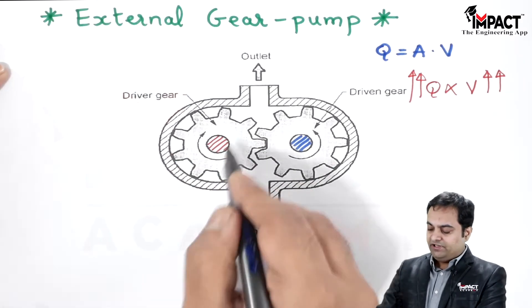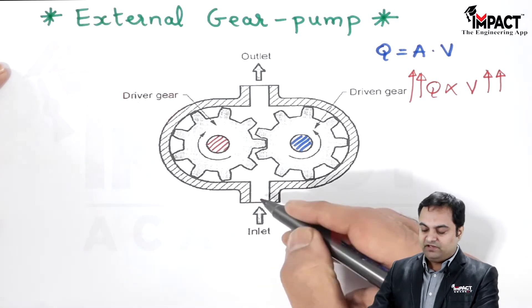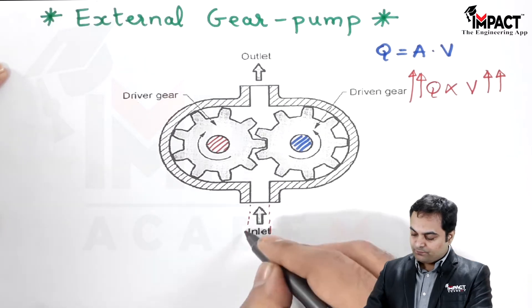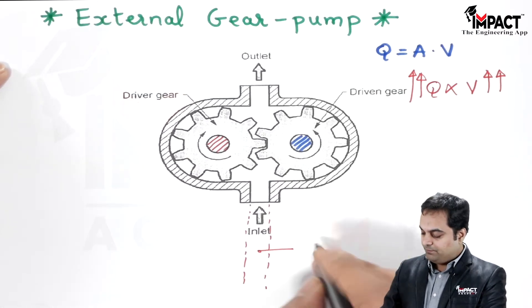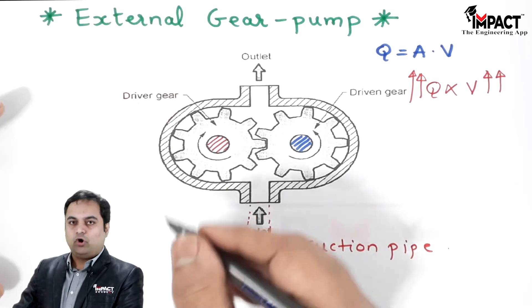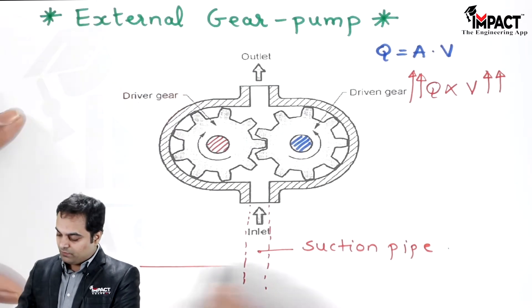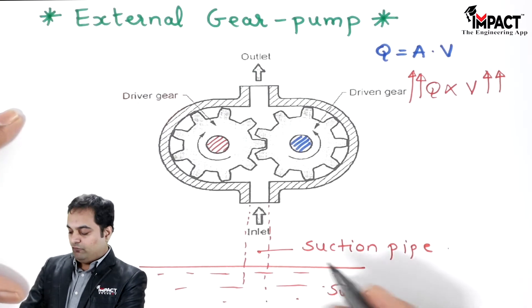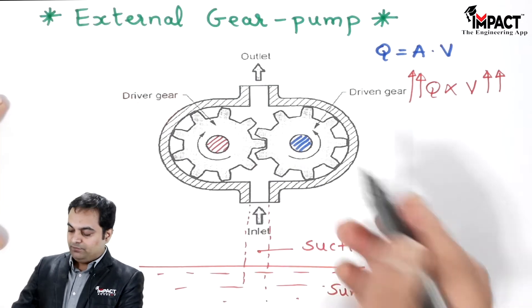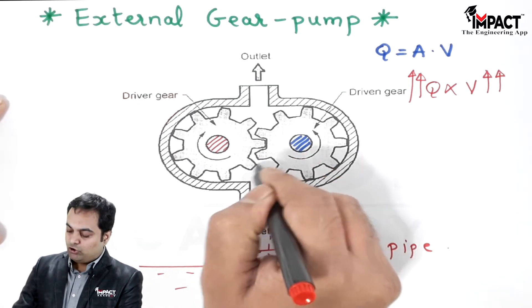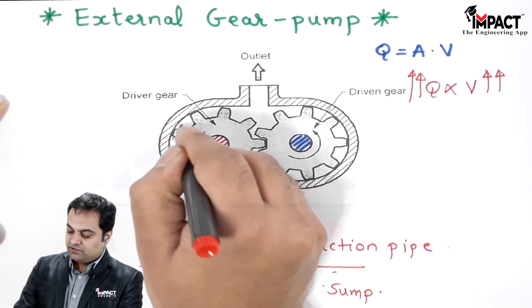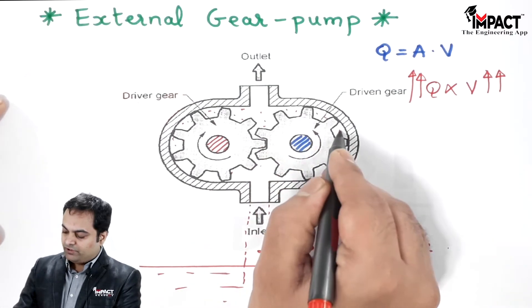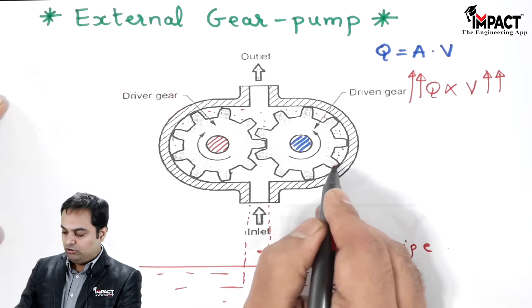There is an inlet which is connected to the suction pipe. This suction pipe takes oil from the oil sump or oil tank. The oil is drawn into the gear pump and occupies all the spaces inside the casing, which is the external casing of the pump.